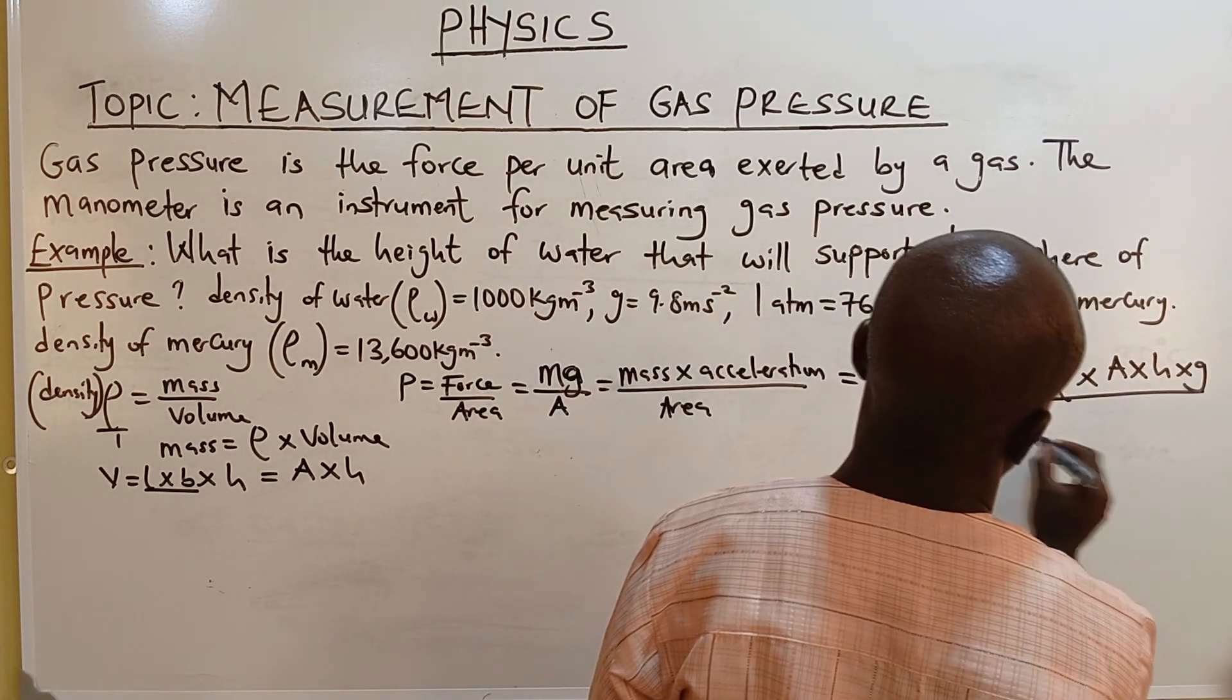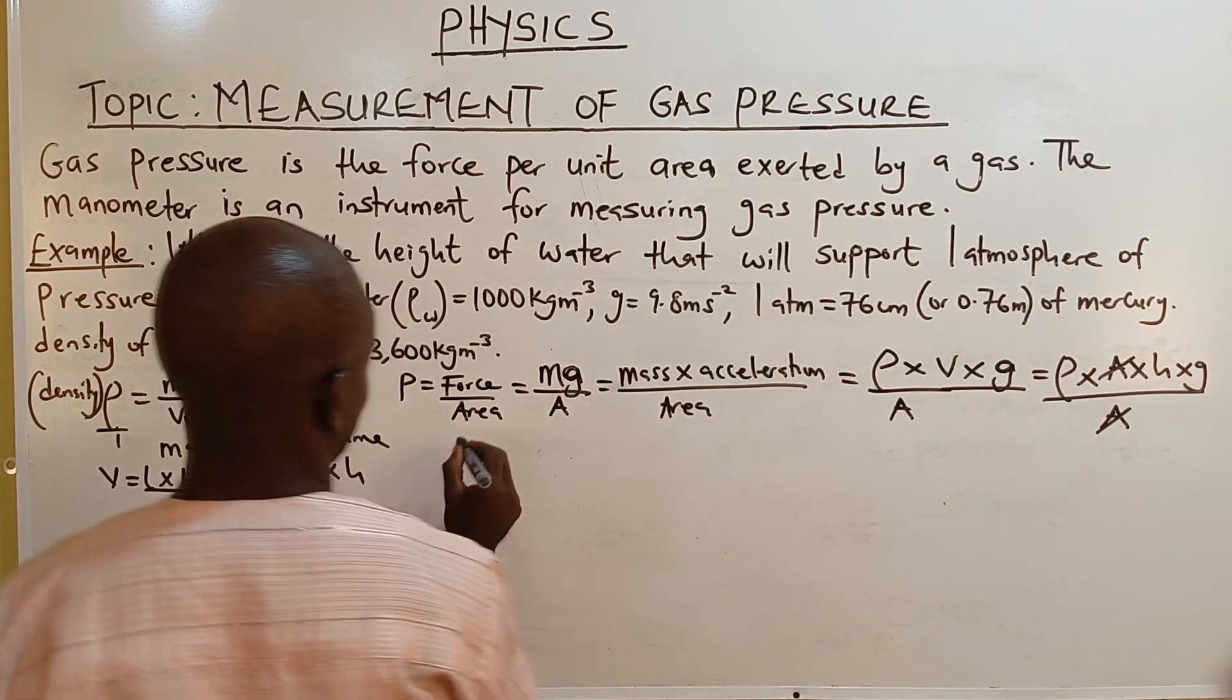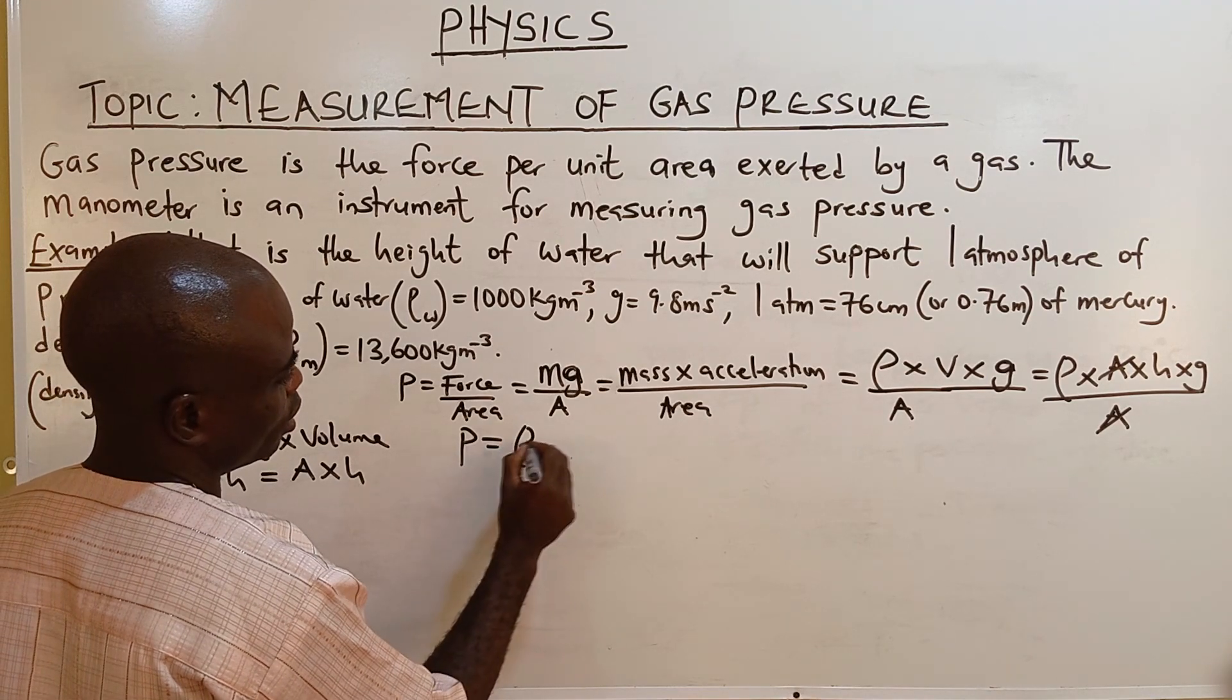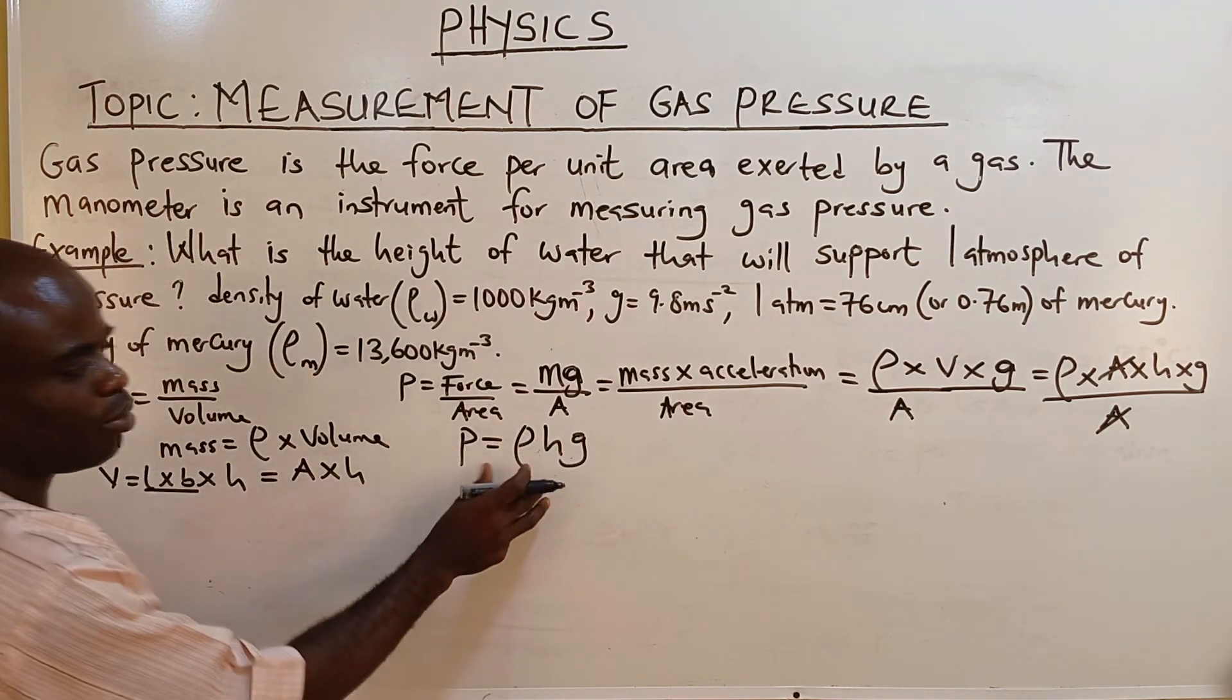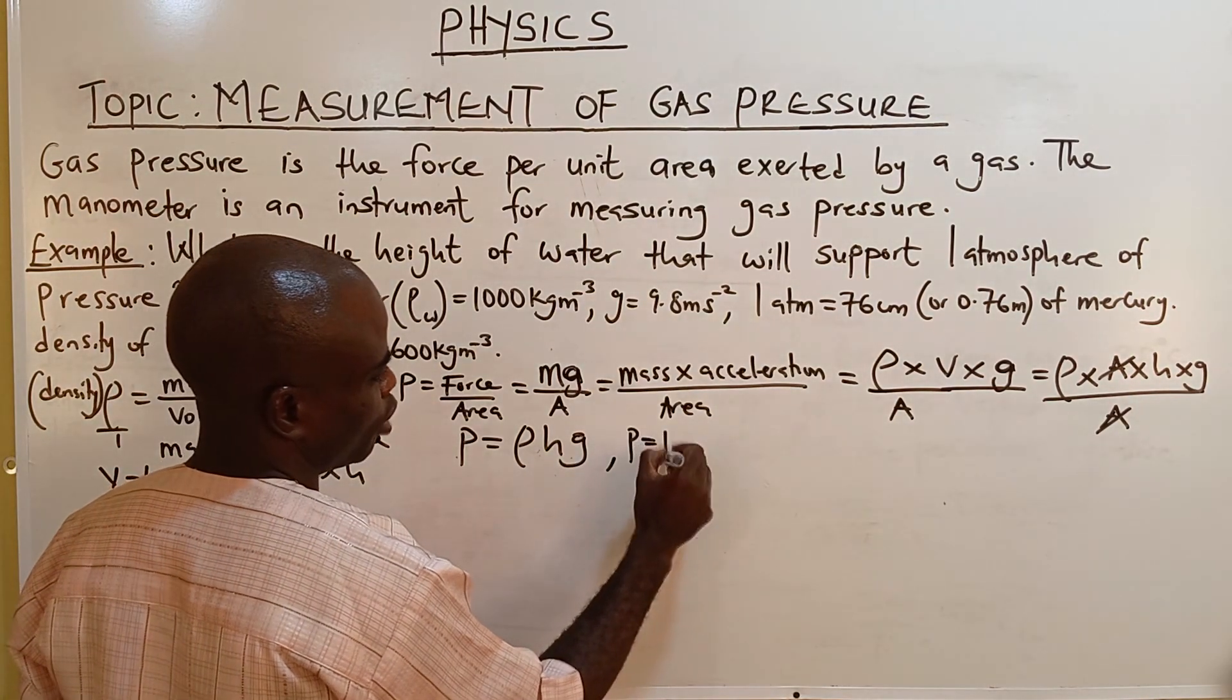Divide by A. A cancels A. We now have pressure to be density times H times G. It's a very important formula. P stands for pressure.